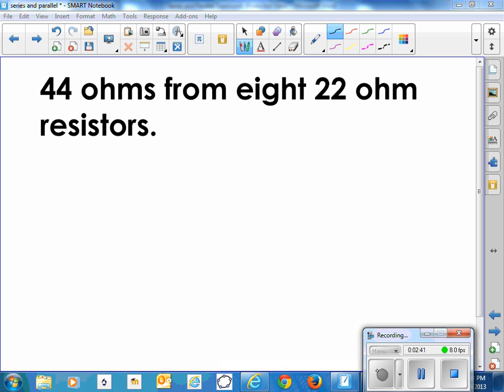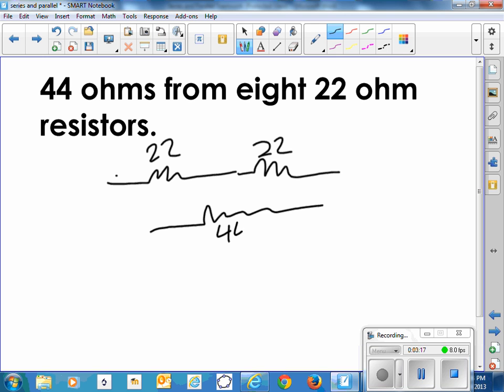Let's say we want a 44-ohm resistor. Here we have available eight 22-ohm resistors. The simplest way would be, well let's do a couple of different ways anyways. If I put a 22-ohm resistor in series with a 22-ohm, then the equivalent from end to end would look like a 44-ohm resistor.